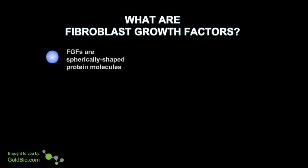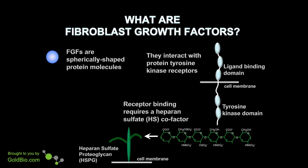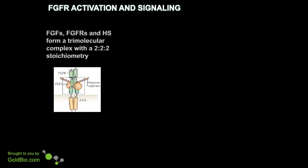FGFs are spherically shaped protein molecules. They interact with protein tyrosine kinase receptors, which have an extracellular ligand binding domain shown here, and an intracellular tyrosine kinase domain. The receptor binding of an FGF ligand to an FGF receptor requires a cofactor, which consists of heparin sulfate proteoglycans. Over here we see a three-dimensional view of FGF and heparin sulfate in a complex — a crystal structure of FGF complexed with heparin sulfate.